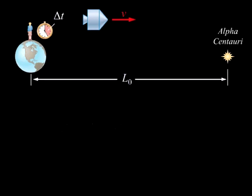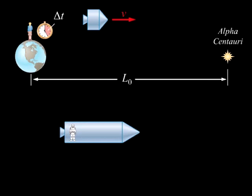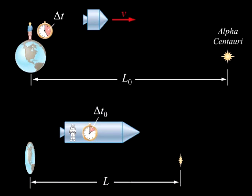From the point of view of the passenger on the ship, for whom the rocket is at rest, the Earth and Alpha Centauri appear to move by at a speed v. The passenger on the ship determines the time to be Delta T0, and the distance of the trip to be L.